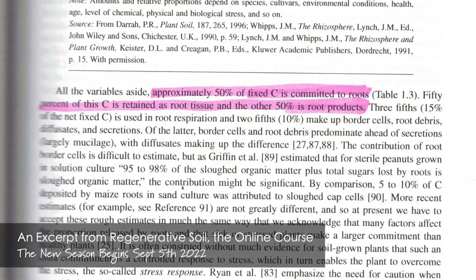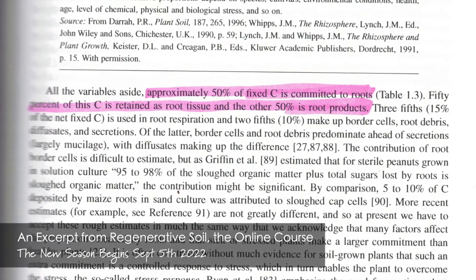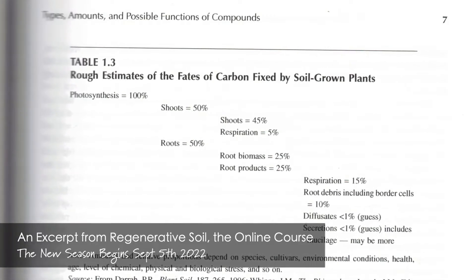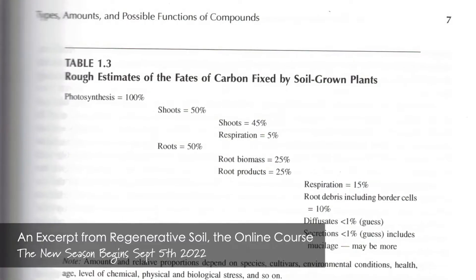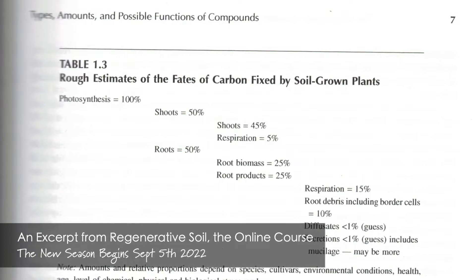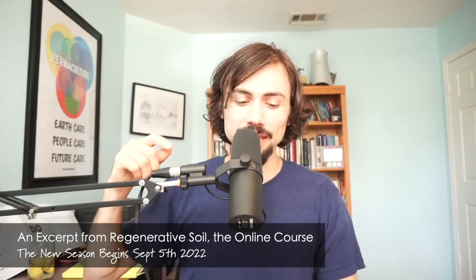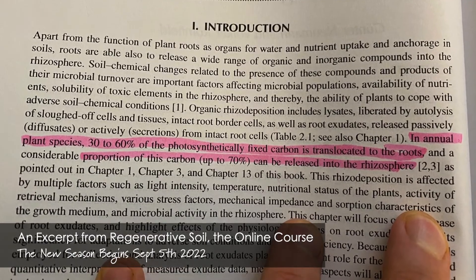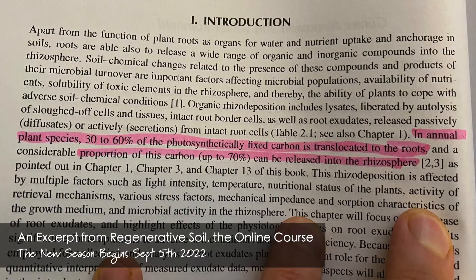Things are a lot more complicated, especially when we think about the fact that approximately 50% of fixed carbon is committed to the roots. 50% of the carbon is retained as root tissue and the other 50% is root products. In annual plant species — and we're on page 24 — 30 to 60% of photosynthetically fixed carbon is translocated to the root, and a considerable proportion of this, up to 70%, can be released into the rhizosphere. So 70% of 60% is much closer to 50%.